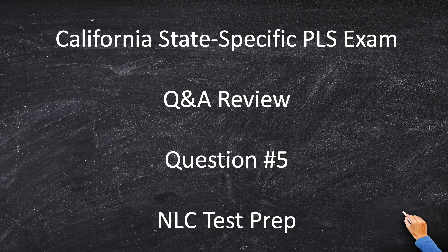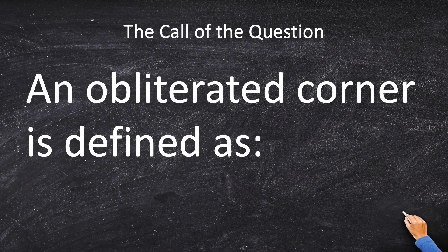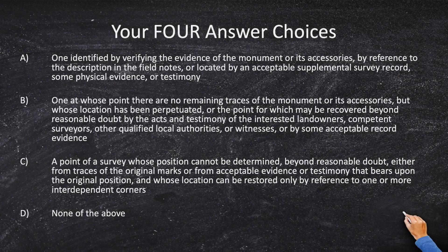One of the most important distinctions in the PLSS system is the difference between a lost, obliterated, or existent corner. Each of these corners has a legal definition you must know in order to classify the corner. An obliterated corner is — answer choice A — one identified by verifying the evidence of the monument or its accessories by reference to the description in the field notes, or located by an acceptable supplemental survey record.